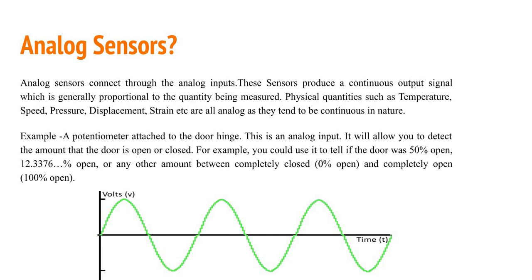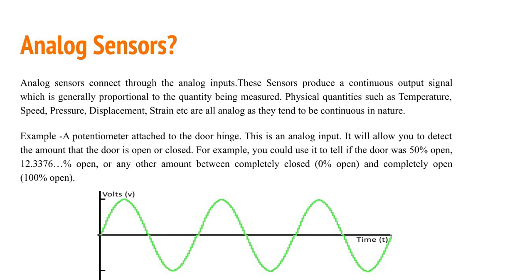So we will work with analog sensors. We have analog sensors like pressure sensors, accelerometers, and LDR sensors. Pressure sensors basically measure pressure. Accelerometers are used to measure position, velocity, shock, and vibration. LDR is a light sensor which tells us how much light is present.